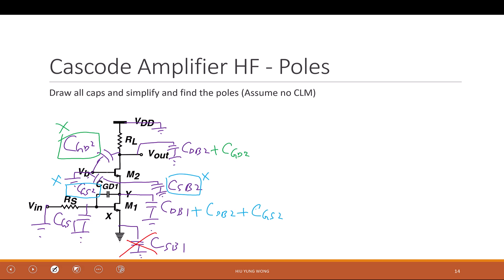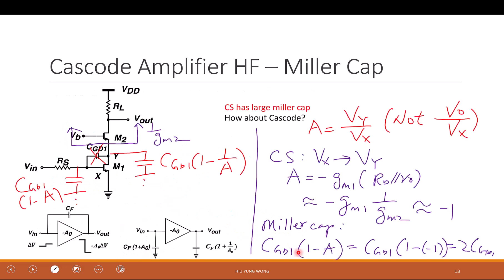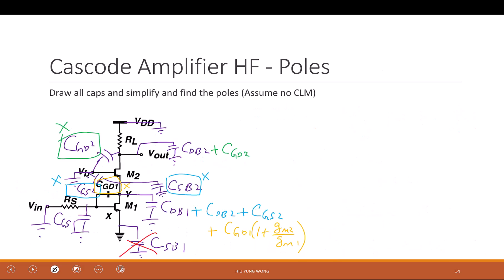I still have one more capacitor to deal with — the Miller effect for CGD1. CGD1 gets replaced by CGD1 times (1 − 1/A) on the output side, which equals Gm2/Gm1 times CGD1 ≈ 2·CGD1, and CGD1 times (1 + Gm1/Gm2) on the input side, where A = Gm1/Gm2.